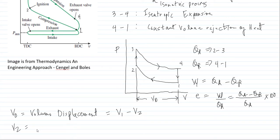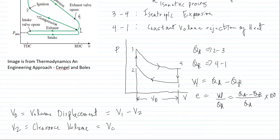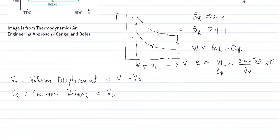V2 is what you call the clearance volume, sometimes written as V_C. Also, because process 2 to 3 is an isometric process, V2 is equal to V3. And since process 4 to 1 is also isometric, V4 is equal to V1.